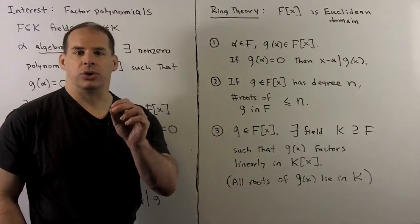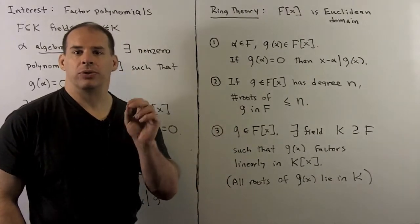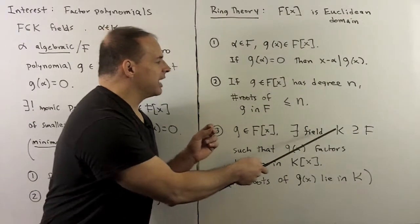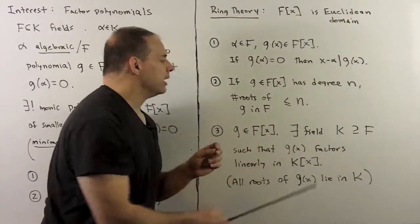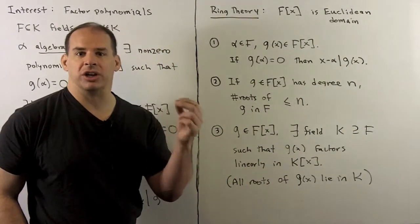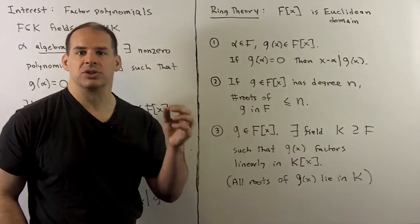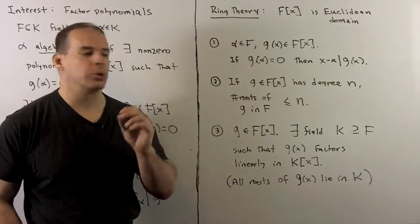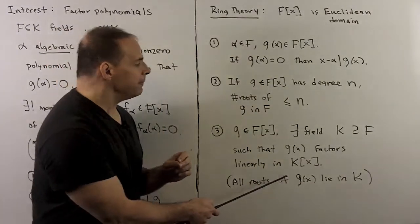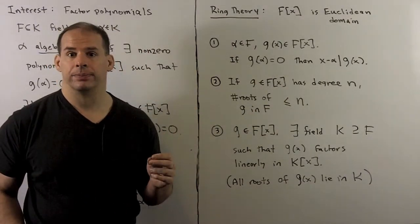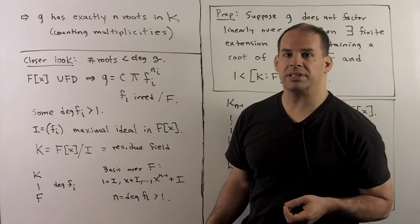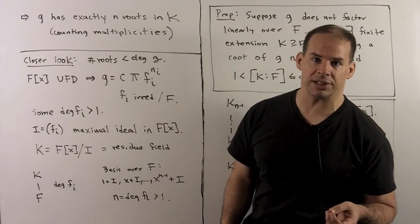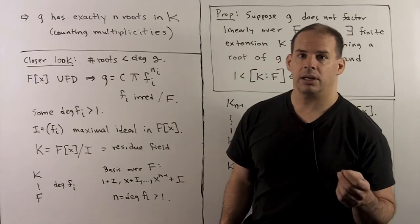Finally, still using g with coefficients in f, there exists some extension field k containing f such that g(x) factors linearly in k[x] — as a polynomial over k. That's the same as saying all roots of g lie in k, or equivalently, g has exactly n roots in k counting multiplicities.